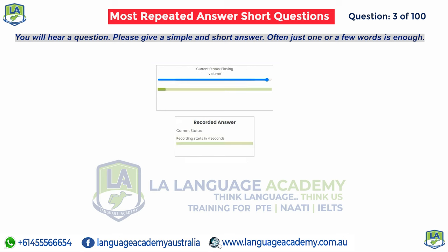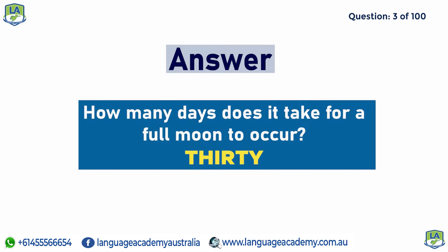How many days does it take for a full moon to occur? 30.